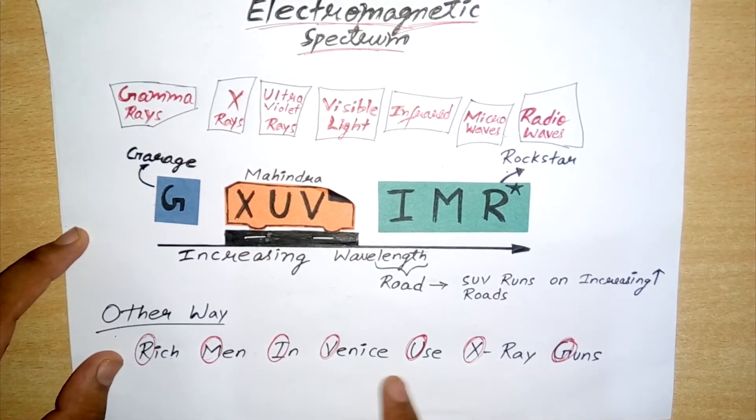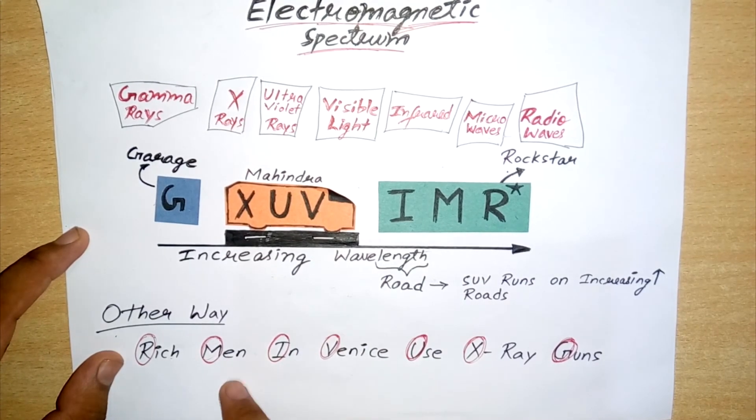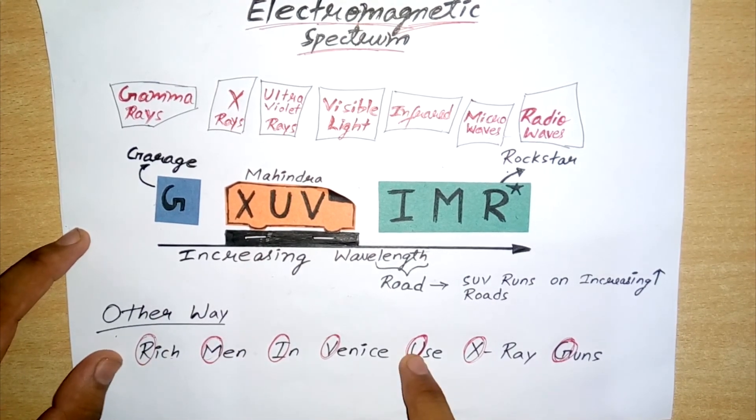Which is: rich man in Venice use X-ray guns. And please remember, this one is the other way round. That is, this is for decreasing wavelength, and also we can say for increasing frequency. So that's it.